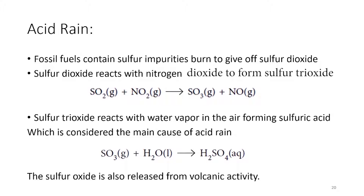The problem with sulfur trioxide, SO3, is that it reacts with water vapor in the air, forming sulfuric acid, which is a very corrosive acid. Sulfur oxides are also released from volcanic activities in large quantities, which when coming in contact with atmospheric water vapor, they form sulfuric acid as well.